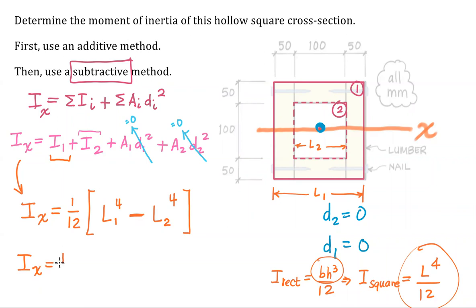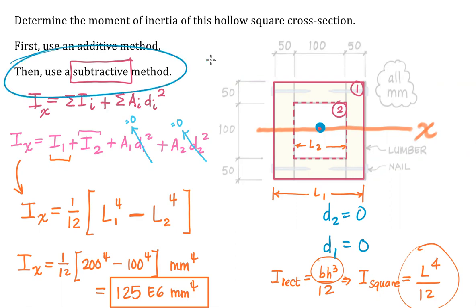So our final computation becomes quite simple. l sub one is equal to 200 to the fourth power minus l sub two is 100 to the fourth power. Of course, this is all millimeters to the fourth. And you'll get the same answer as before. 125 e six millimeters to the fourth. That is the subtractive method. In this case, the subtractive method is much easier, faster and more efficient than the additive. So in the spirit of working smarter, not harder for this type of problem, I would use a subtractive method. 100% of the time. That's the end of the video. Thanks for tuning in.